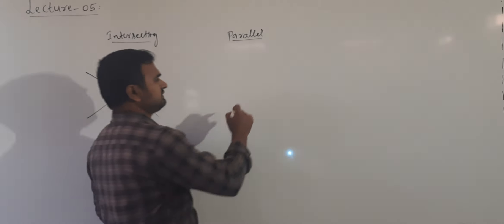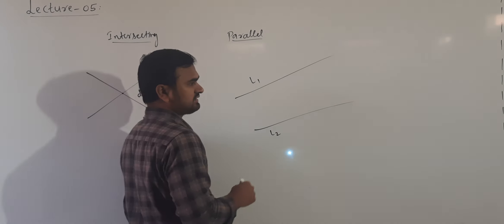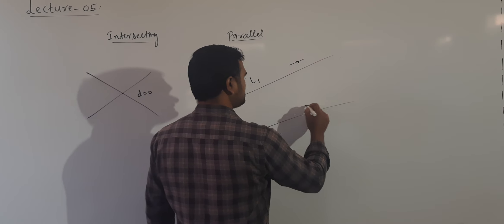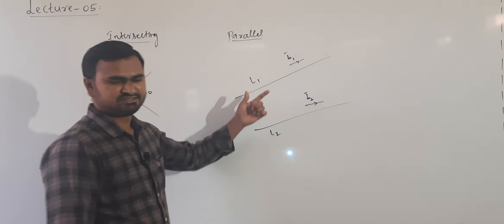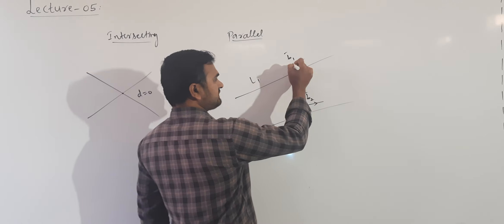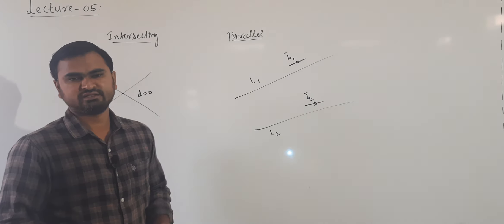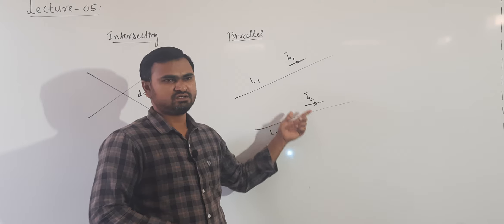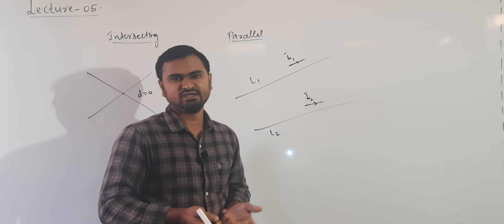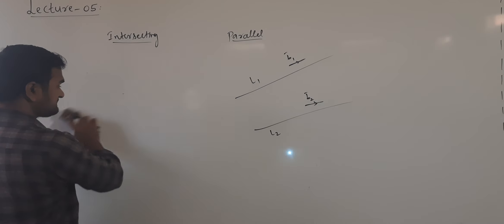If the lines are parallel, suppose this is L1 and this is L2. Parallel lines means their parallel vectors B1 bar and B2 bar are also parallel. So just check whenever we write the equations of the lines whether B1 bar and B2 bar are parallel or not. If they are parallel, the lines are parallel. If not, they may be skew lines.